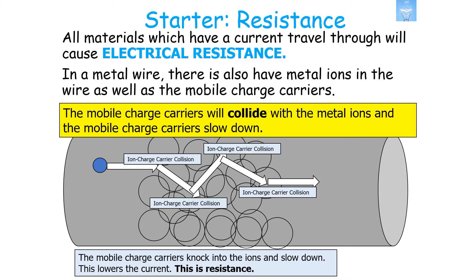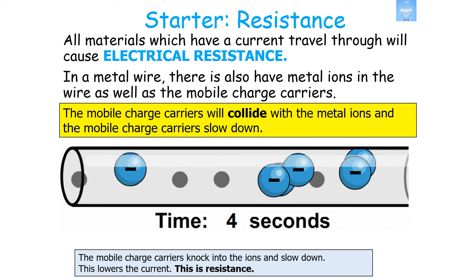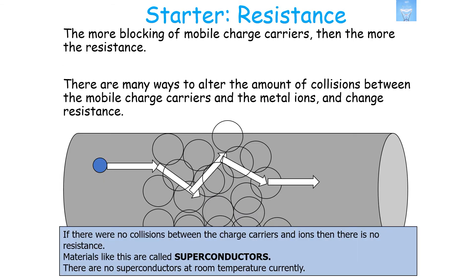As the mobile charge carriers move through the conductor, they will collide with metal ions which make up the conductor and the mobile charge carriers will slow down. This idea is resistance — it is the ion-charge carrier collisions which slow down our charge carriers, leading to electrical resistance. The more the blocking of the mobile charge carriers, the more the resistance in your material. If there were no collisions between the charge carriers and ions, there would be no resistance.